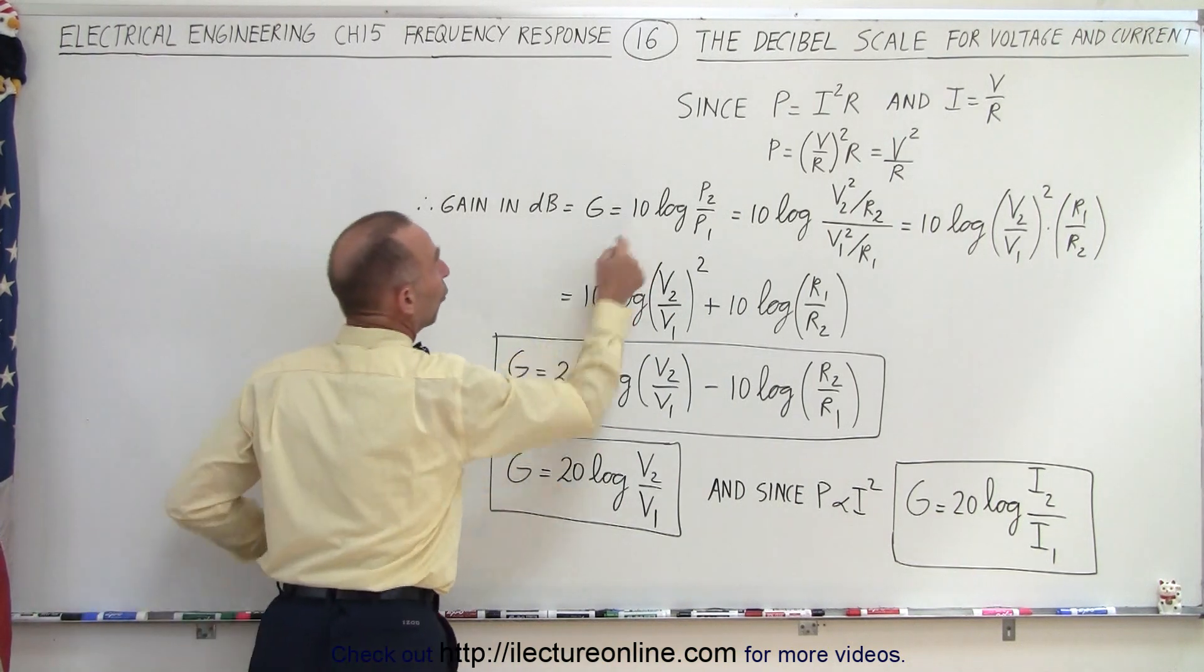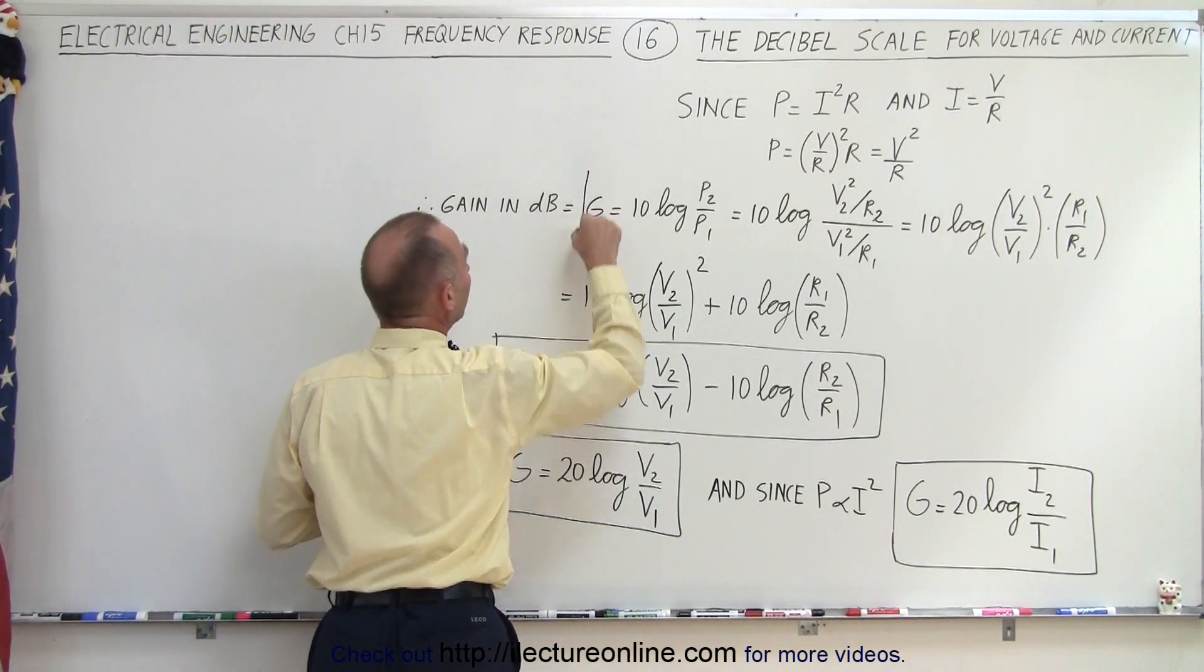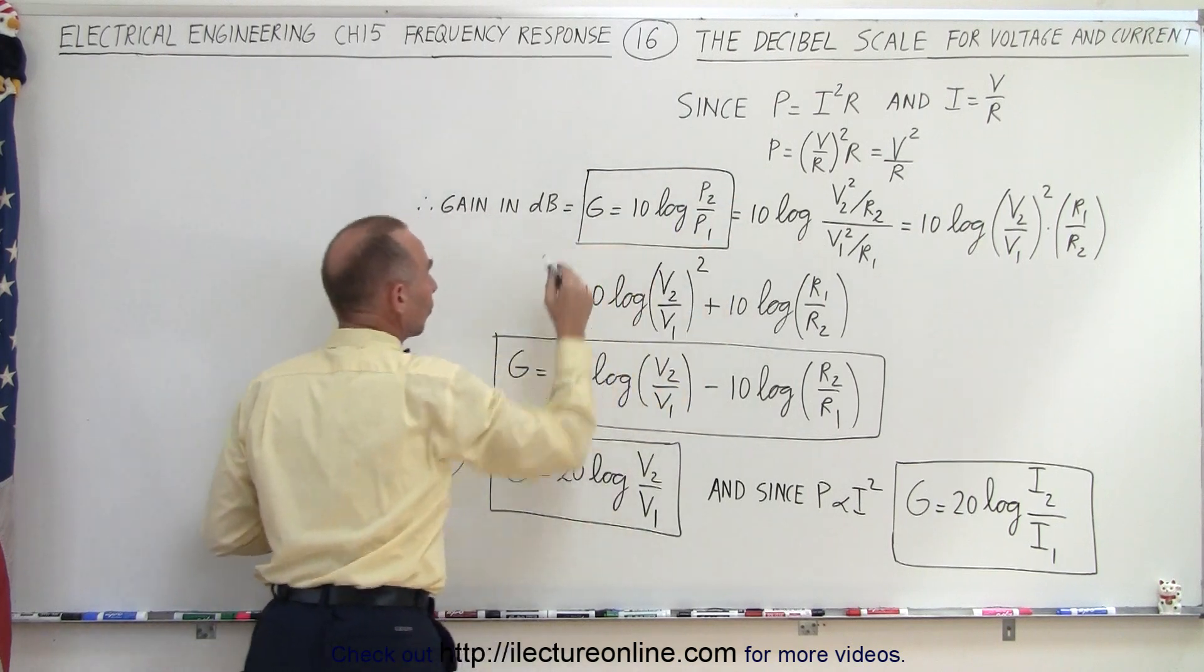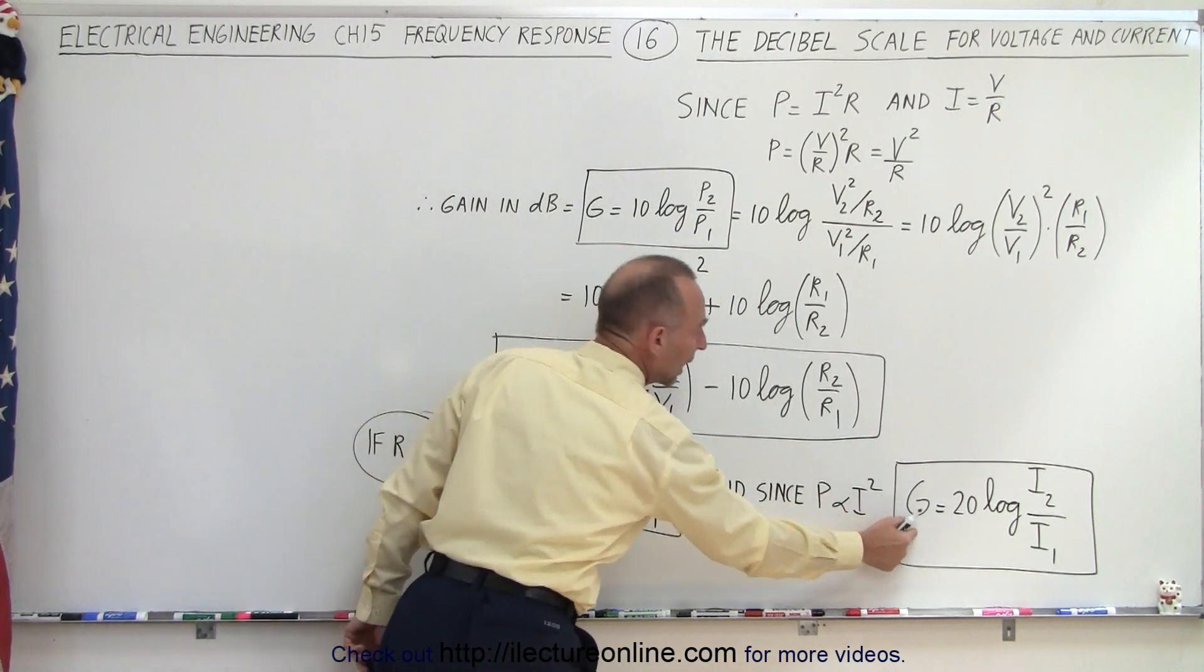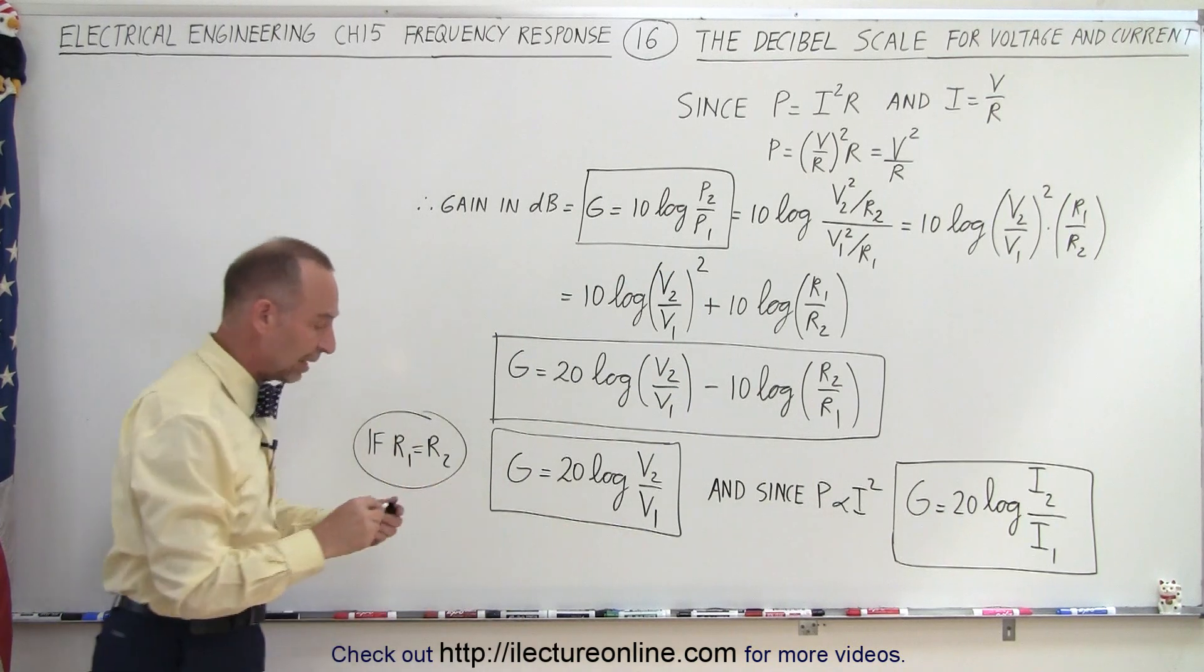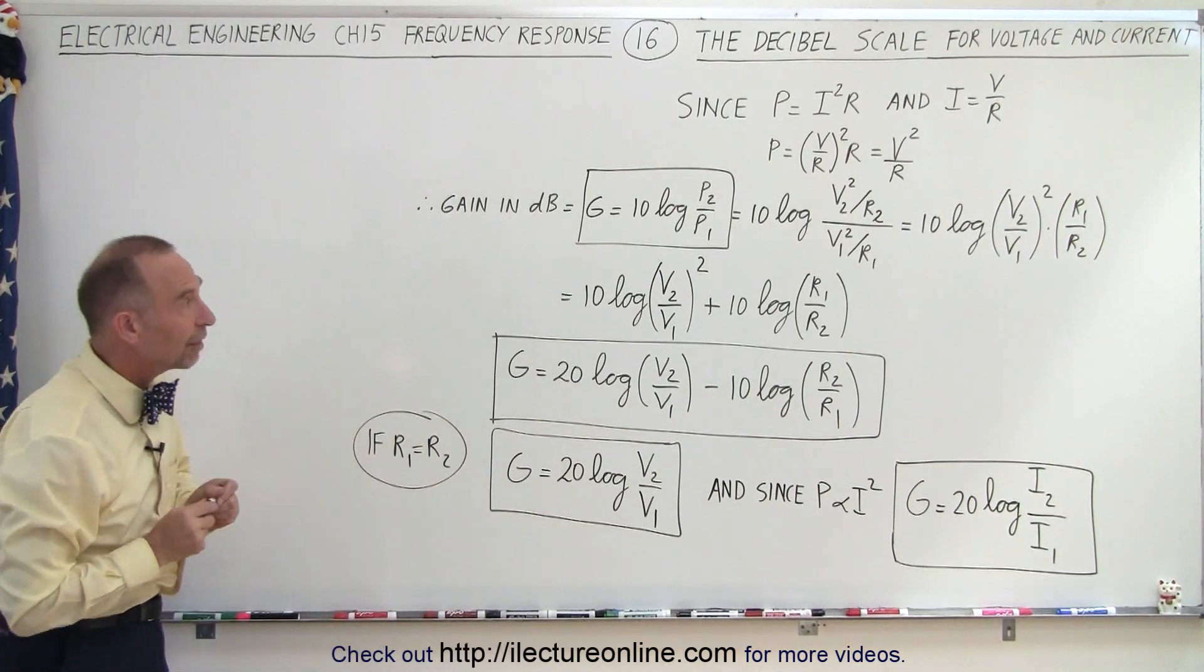We have one for the gain when we use power, and we have equations for gain when we have voltages or the gain when we have the current, and this is what we call the decibel scale for the gain for power, voltage, or current.